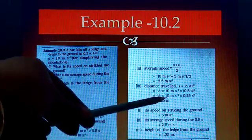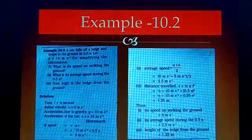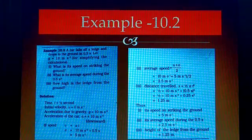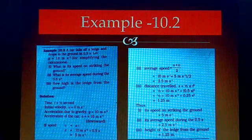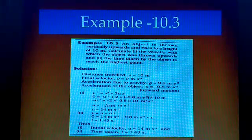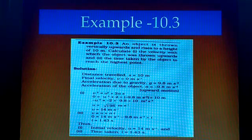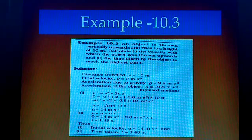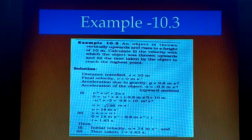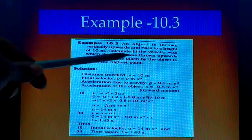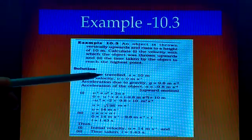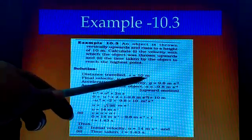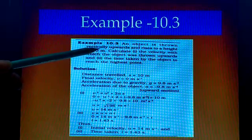Next example 10.3: An object is thrown vertically upwards and rises to a height of 10 meters. Calculate the velocity with which the object was thrown upwards, and the time taken by the object to reach the highest point. These two terms we have to calculate. Distance traveled, that means height, is equal to 10 meters.